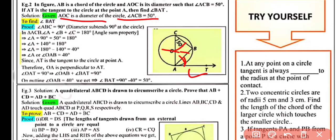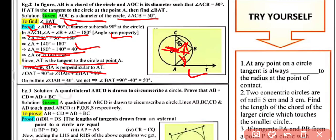Since AOC is a diameter, the angle in a semicircle is 90°, so angle ABC = 90°. In triangle ACB, by the angle sum property: angle A + angle B + angle C = 180°, giving angle A (i.e., angle OAB) = 40°. Since AT is tangent at A, OA is perpendicular to AT, so angle OAT = 90°. Therefore angle BAT = 90° − 40° = 50°.